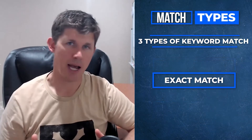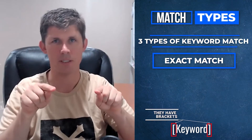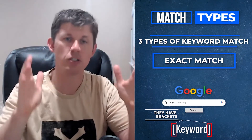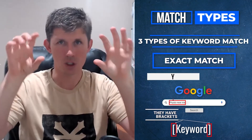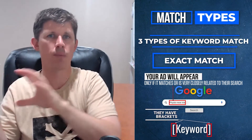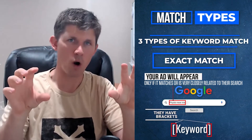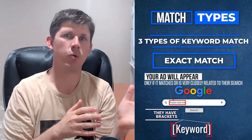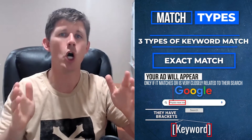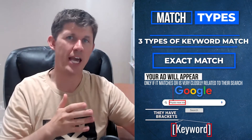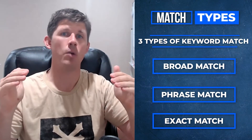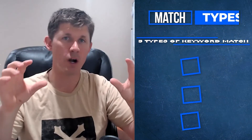The next one is exact match. Exact match keywords have little square brackets on both ends. This tells Google you want your ads to only show up if this specific search term is being searched, or something almost exactly like it. Up until mid-2021, it used to mean only showing up if someone typed in exactly your keyword — like 'physio near me' only for 'physio near me.' But since around May 2021, you also show up for any other search term that shows intent that they're looking for an actual physio.